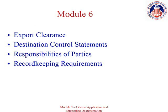In Module 5, we familiarized you with how to sign up for the SNAP-R system. We looked at the important components of an export license application and what type of support documentation is required. We also considered the review process of a license application. In the final module of this series, we'll review export clearance requirements under the EAR, destination control statements, responsibilities of parties, and record-keeping requirements.